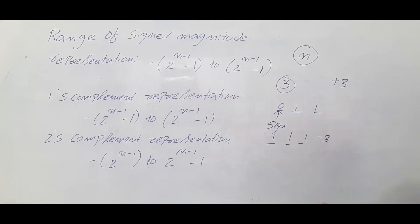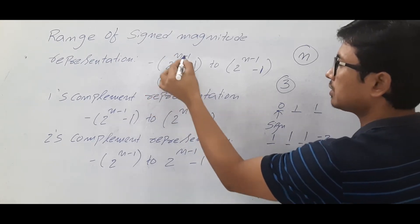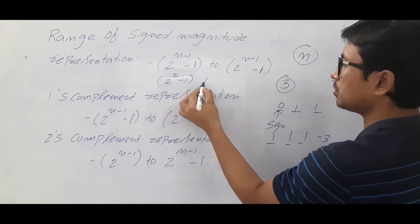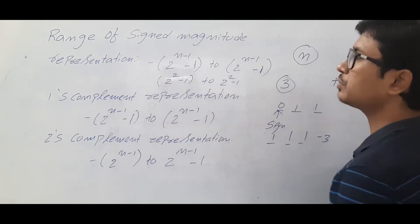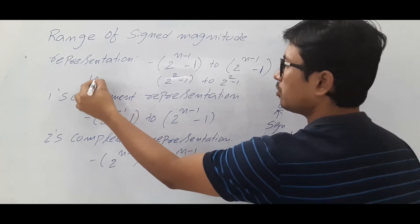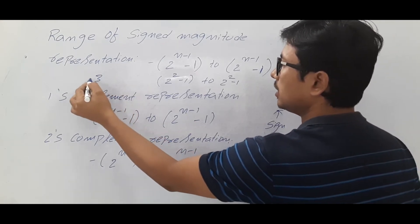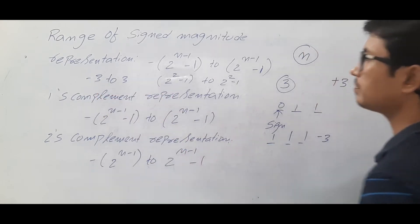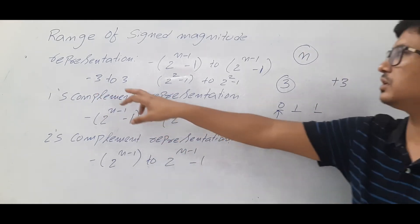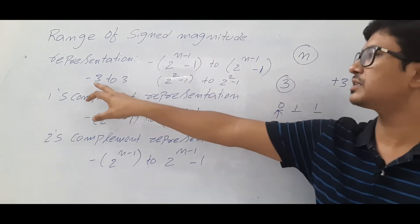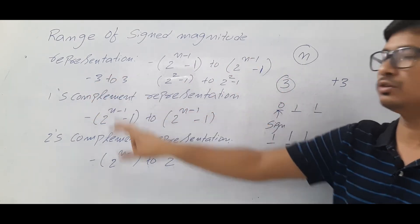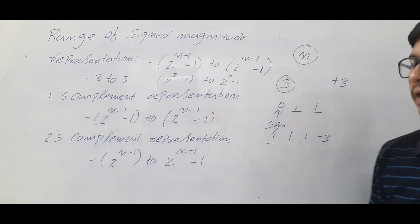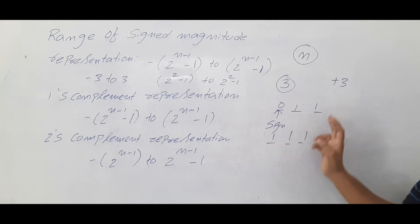You can verify this with the formula: for n = 3, the range is minus 2^(n-1) - 1 to 2^(n-1) - 1, which is minus 2^2 - 1 to 2^2 - 1. Since 2^2 = 4, that gives minus 3 to plus 3. So using 3 bits you can represent numbers from minus 3 to plus 3.